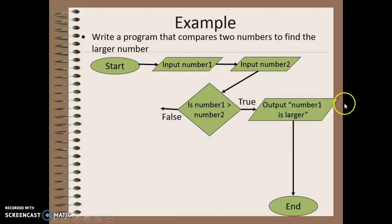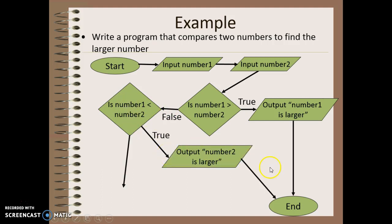Is the first number bigger than the second number? And if it is true, then I can output that number one is larger. If it's false, I have another question to ask. Is number one less than number two? If it is less than, then I can output number two is larger.